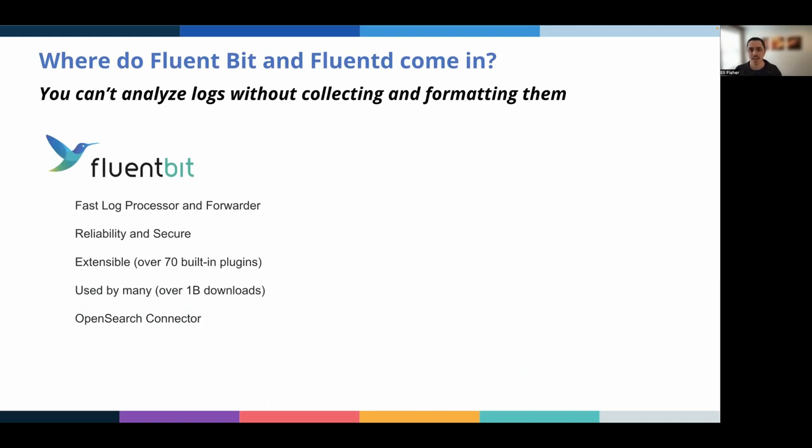FluentBit is a great choice for that. It's fast, it's lightweight, and it's scalable. You can do stream processing with SQL, and you can parse multiple log formats. It has reliability features like back pressure handling and data buffering. It's also secure with support for things like SSL and a number of different authentication mechanisms. It's also extensible with over 70 plugins for data sources, outputs, and much more.